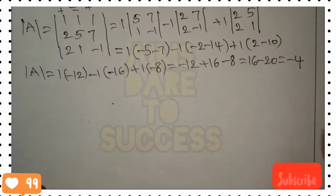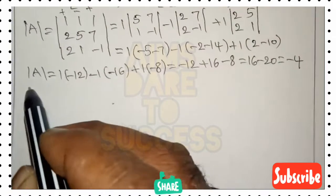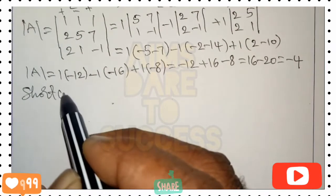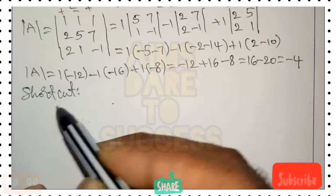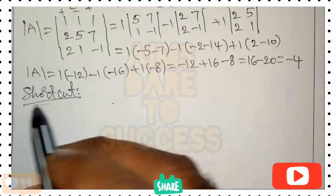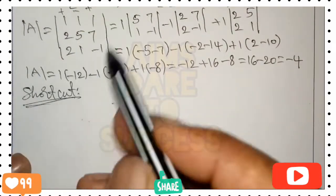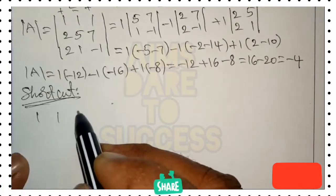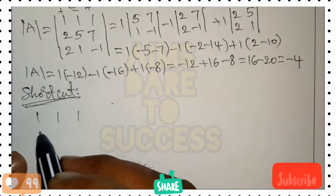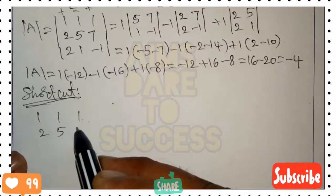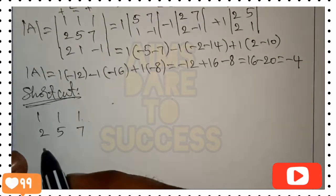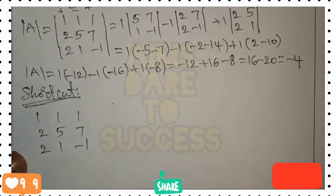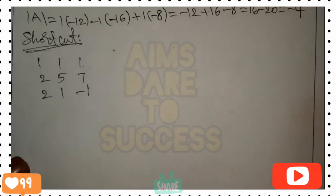Now we apply a shortcut method to find the adjoint of A, which will save time. Write matrix A as it is: 1 1 1 / 2 5 7 / 2 1 -1. Then extend it by repeating column one and column two to the right.